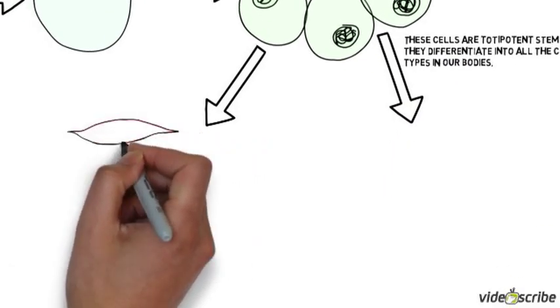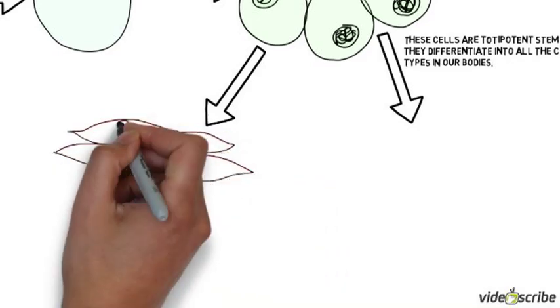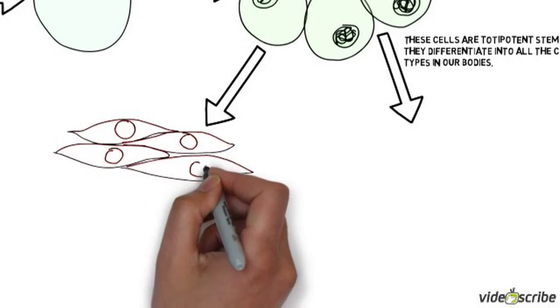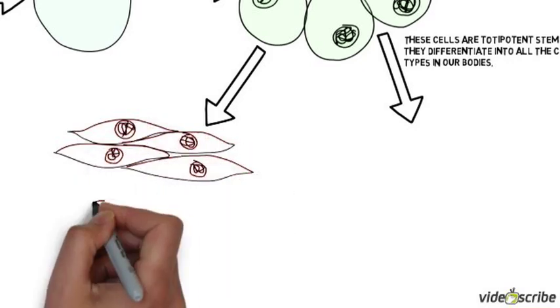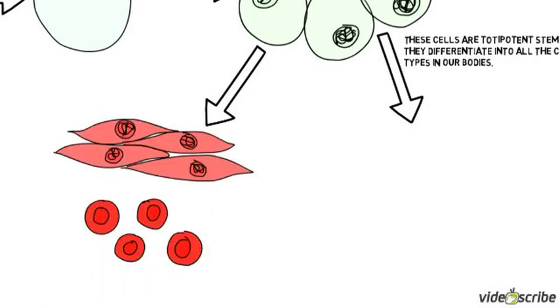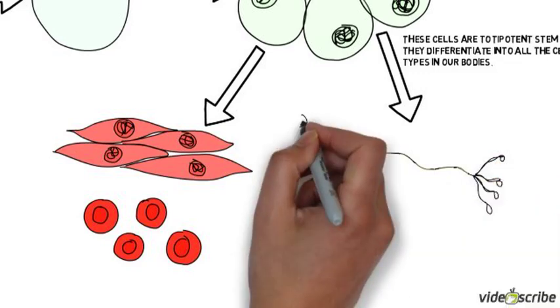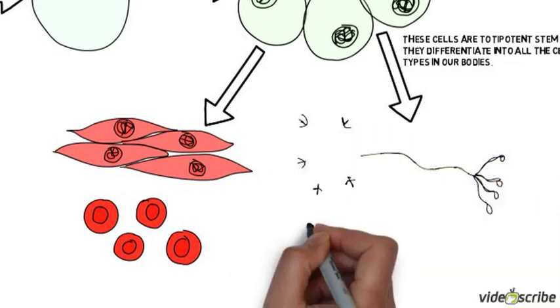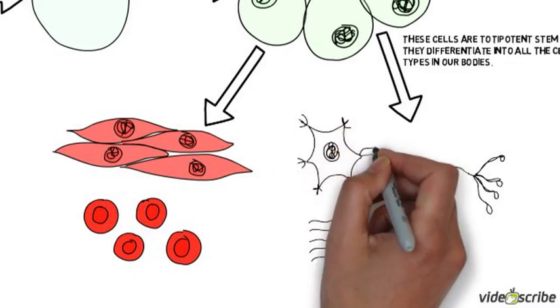For example, these cells will turn into muscle cells which are elongated, can contract, and can also move my skeleton. They can also turn into red blood cells as well as nerve cells or ciliated epithelial cells.